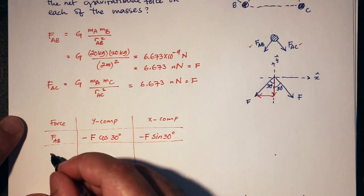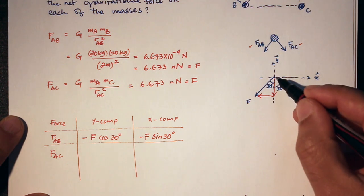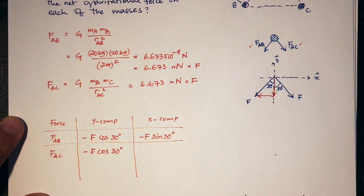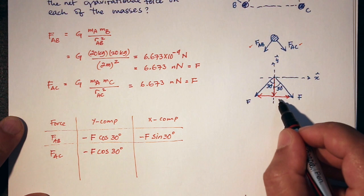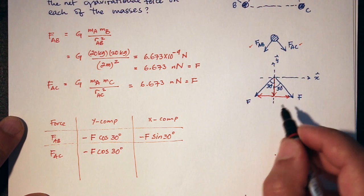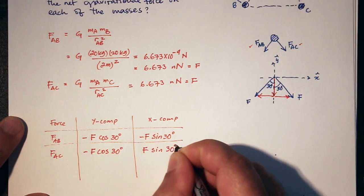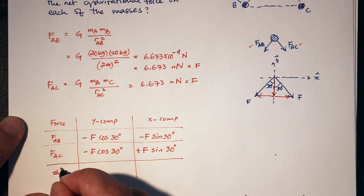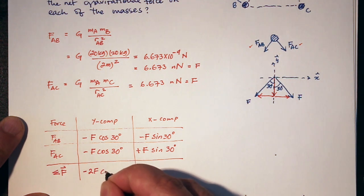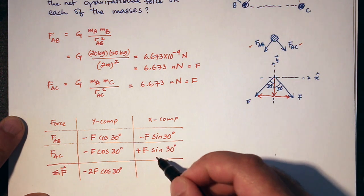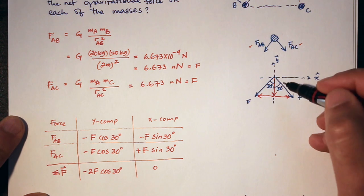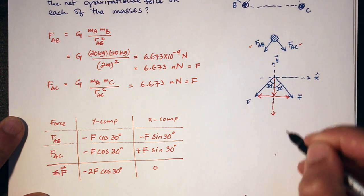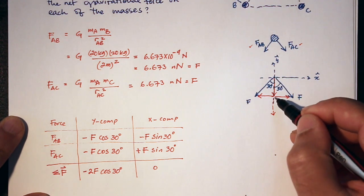For F_AC, its Y component is also minus F cosine 30 degrees — also pointing down. However, its X component is pointing in the opposite direction to F_AB's X component: it's plus F sine 30 degrees along positive X hat. So if I sum the Y components, I get minus 2F cosine 30. And if I sum the X components, they cancel each other out. This makes sense because Y is the line of symmetry.